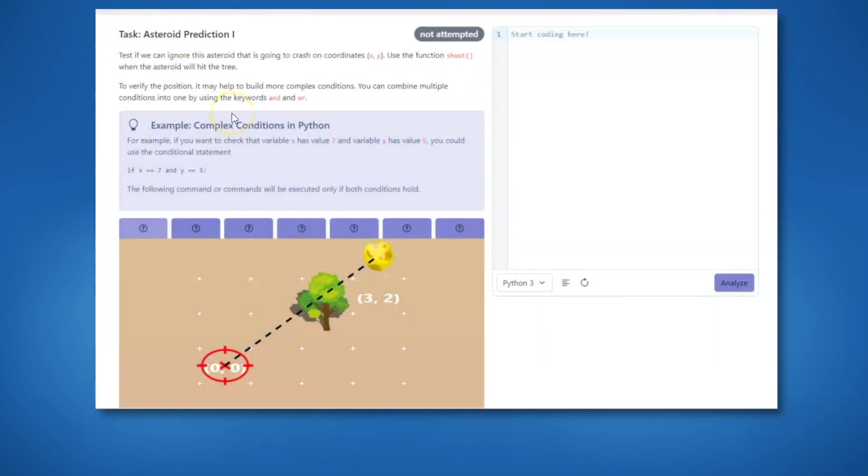In this task, a rogue asteroid is on a collision course with our planet! Our mission is to decipher whether it poses a threat to one of the trees we have planted, located at the coordinates x comma y. When it looks as if the collision will happen, our code must initiate the shoot function to thwart the impending collision.